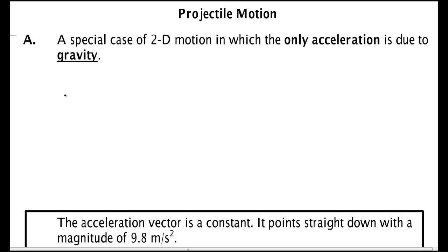We're now going to move to the case of projectile motion. Projectile motion is just a special 2D case of uniform acceleration problems using the kinematic equations. So you've got some sort of ball here, and that ball is projected with some initial velocity v-naught at some angle.